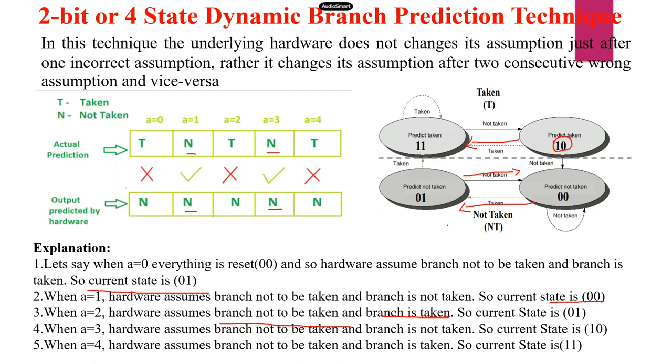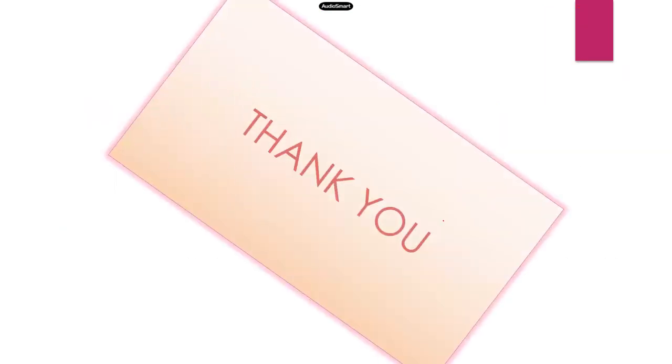This is the way to find the prediction technique compared to the two-state algorithm. It has many advantages and various results. So the two-bit four-state algorithm is the better one than the two-state algorithm. I hope you understand the dynamic branch prediction algorithm. Thank you.